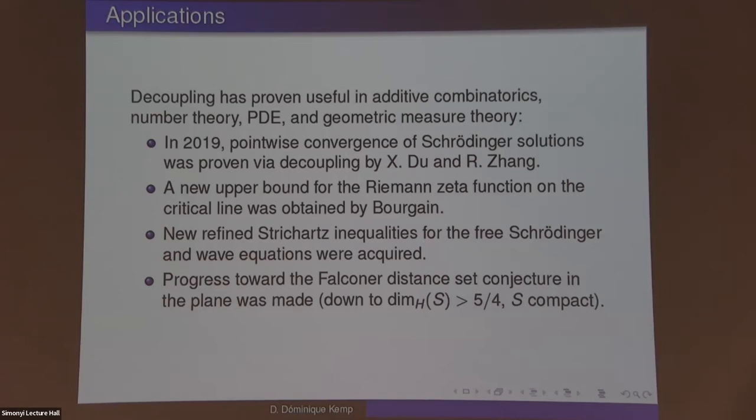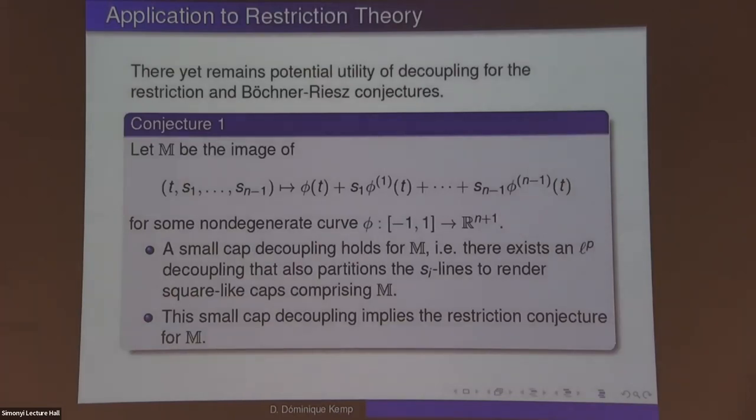Of course, there is the well-known application to Vinogradov's mean value theorem, which was also independently proven by Trevor Wooley. Concerning the decoupling proof, Guth, Demeter, and I think Wang were the ones to provide it via decoupling methods. Wang is also one of the authors on the last point where progress towards the Falconer distance set conjecture was secured.